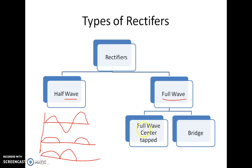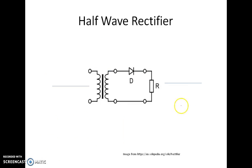The full-wave is again divided into two types: full-wave center-tapped and bridge. Let's start with the half-wave rectifier. Only one diode is present. So, here we have the transformer, the diode and the resistor as the load.